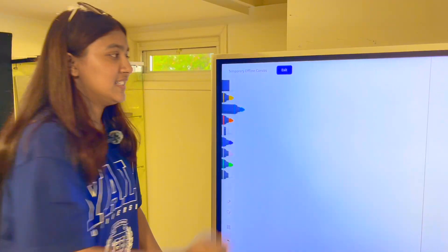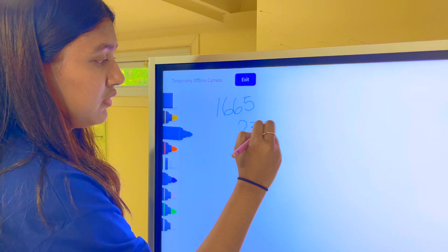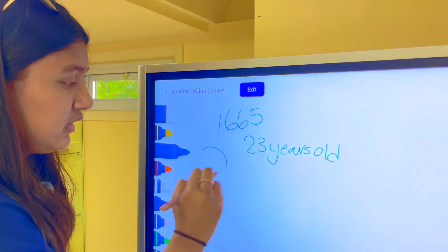Today I'll be teaching you about Newton's second law, F equals MA. In 1665, Isaac Newton, just only 23 years old, was sitting underneath an apple tree.